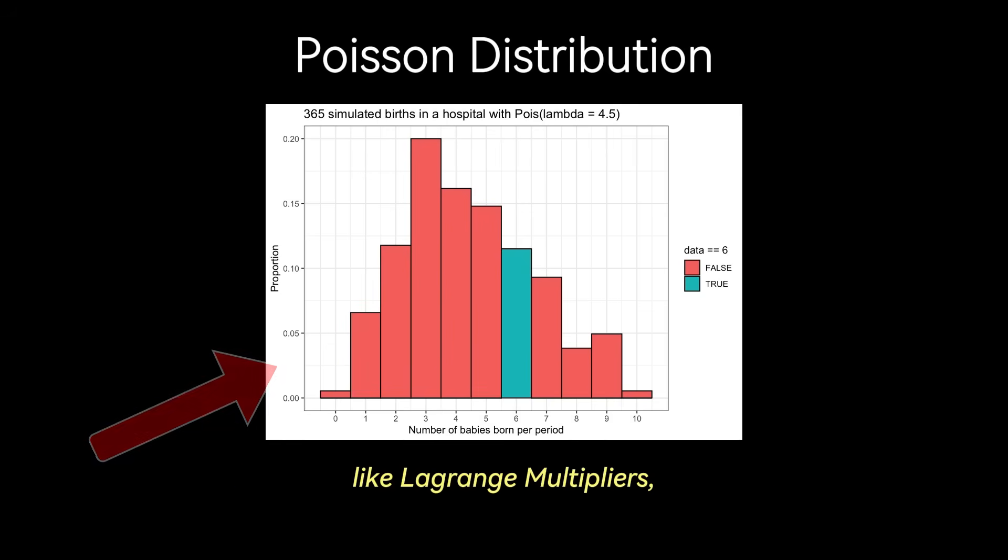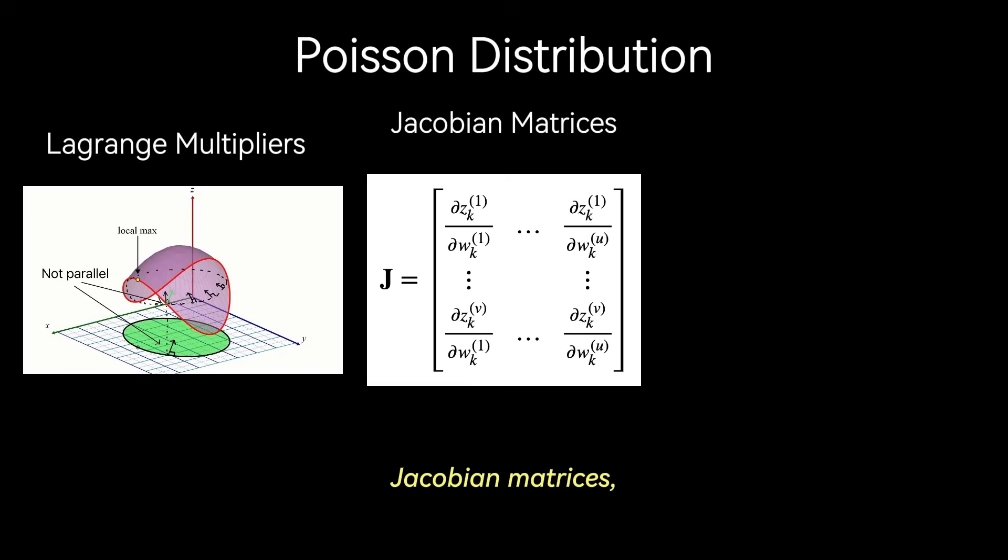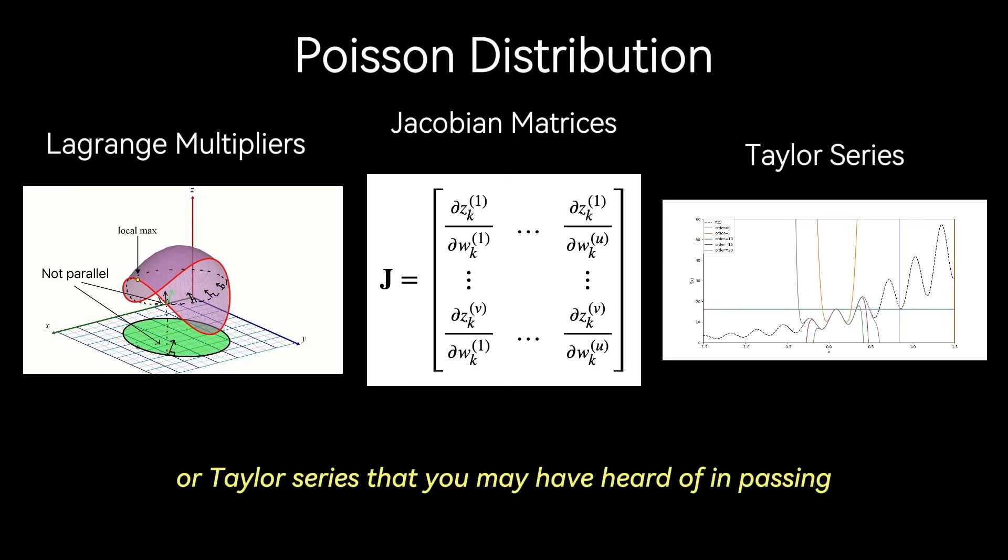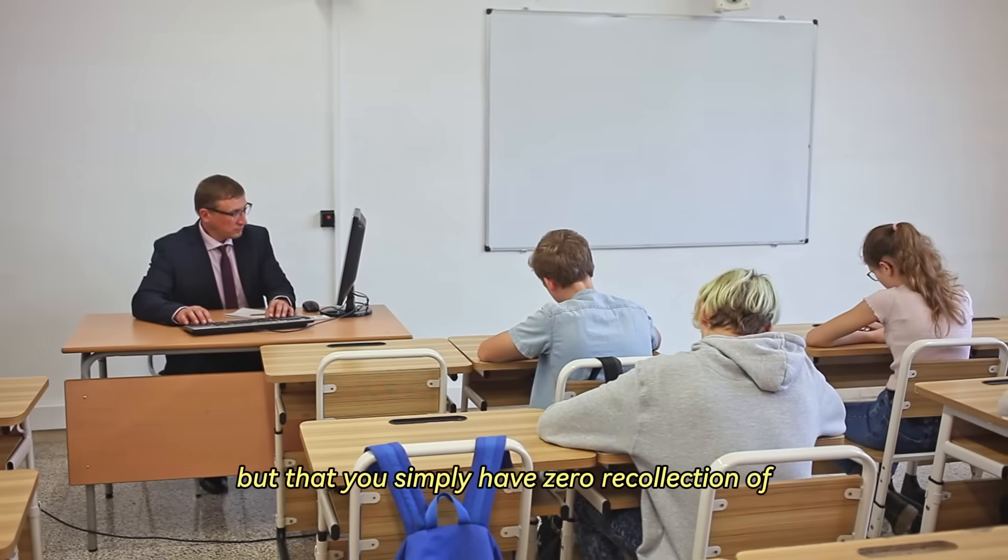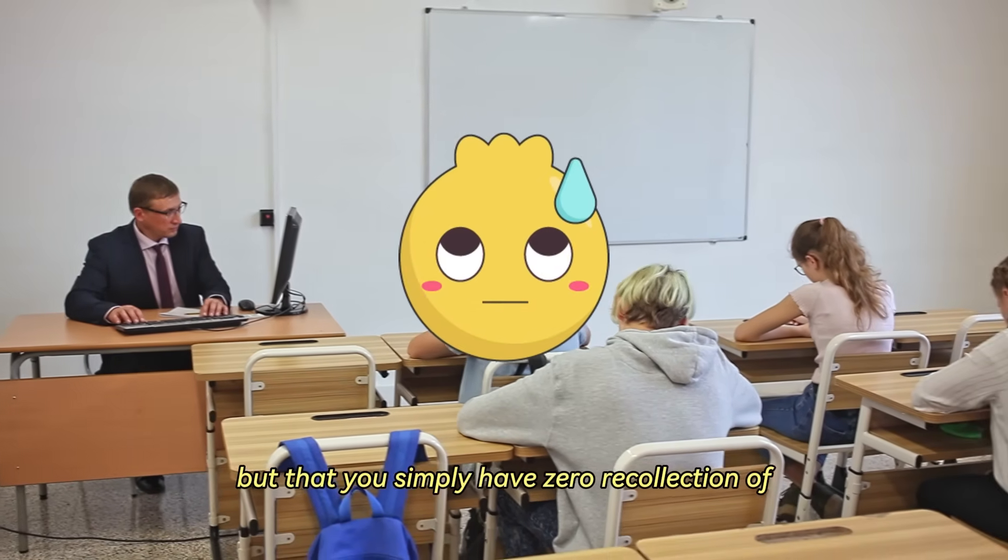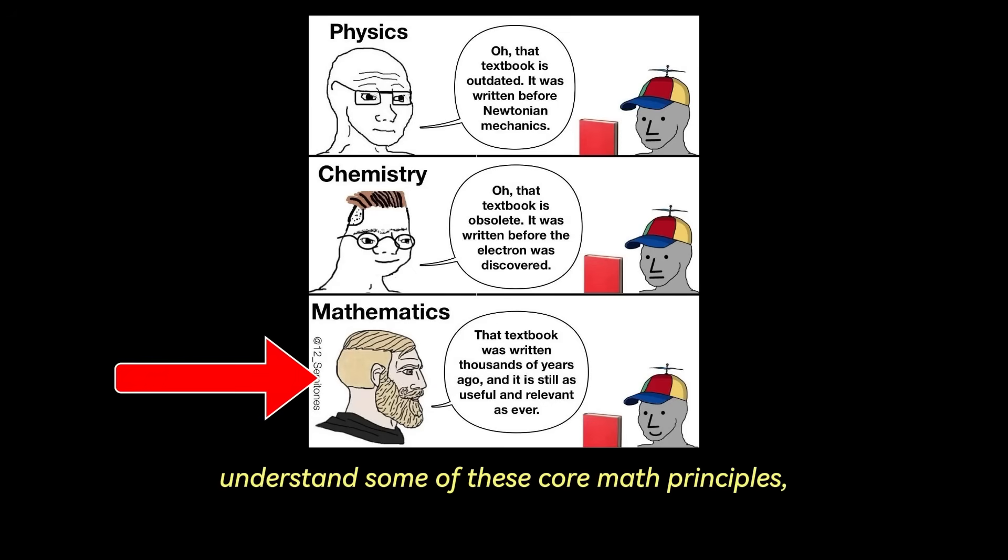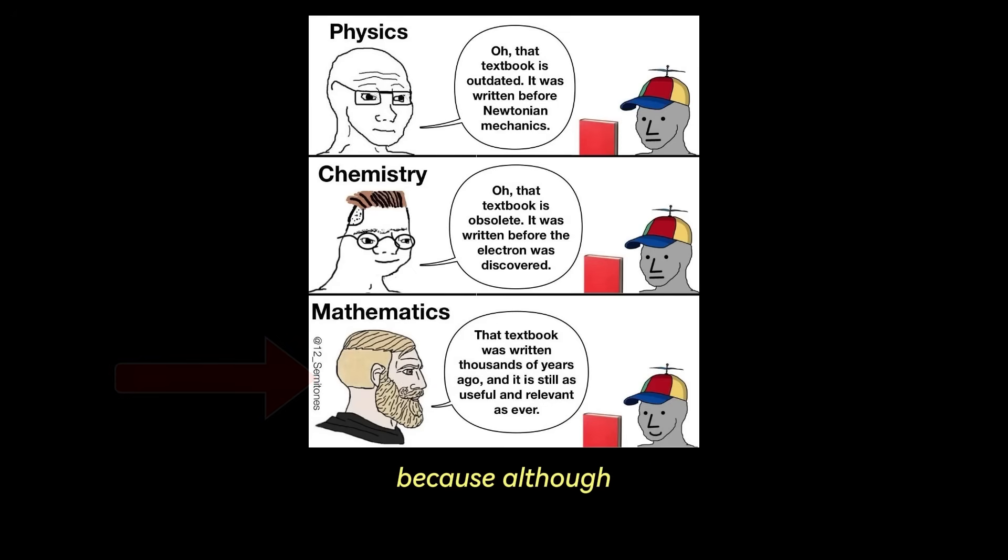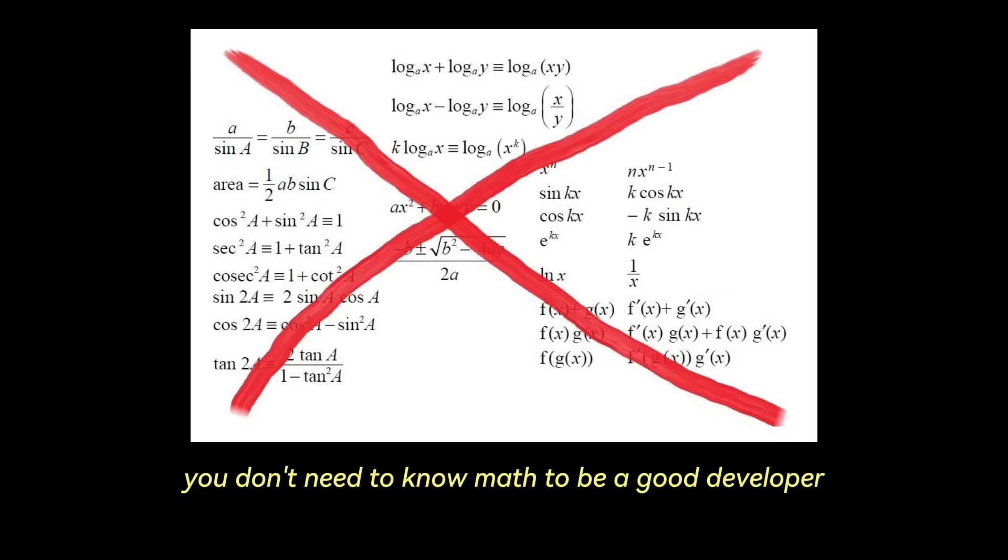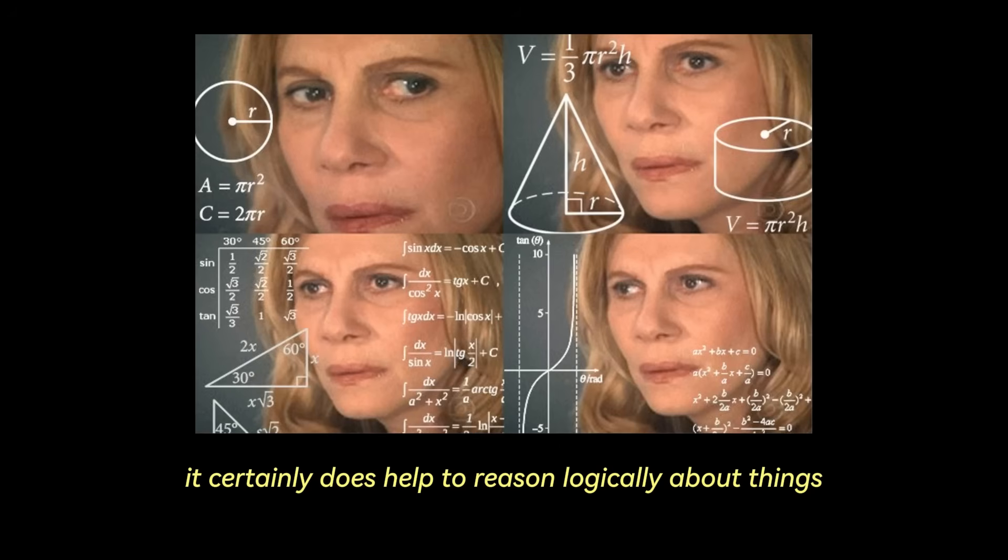Poisson distribution is one of those concepts like Lagrange multipliers, Jacobian matrices, or Taylor series that you may have heard of in passing or may have come across in a lecture, but that you simply have zero recollection of. And that may be a problem, right? You should take the time to at least understand some of these core math principles, because although you don't need to know math to be a good developer, it certainly does help to reason logically about things.